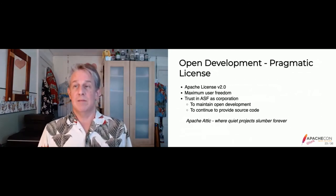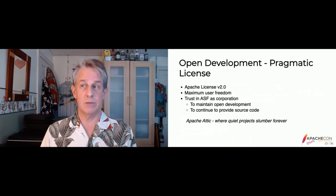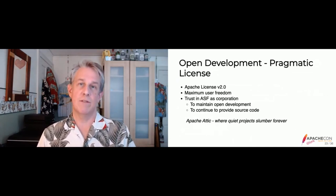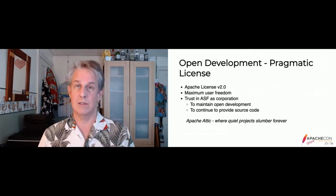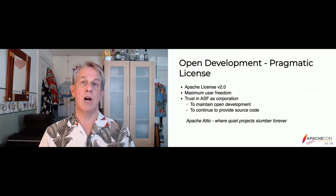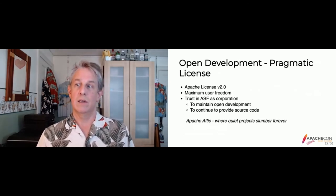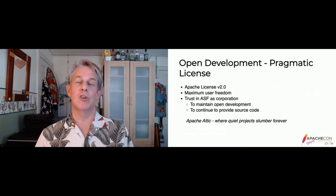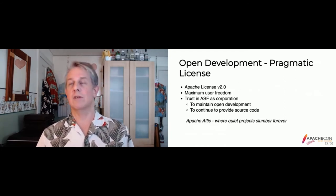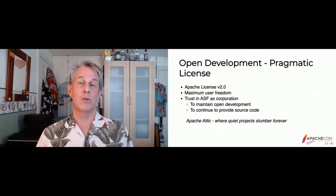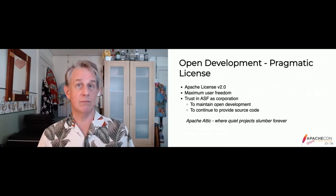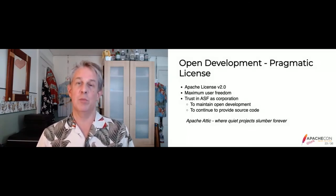A key part of open development is the pragmatic license. Apache is often synonymous with our license, now Apache License version 2.0. The point of our license is maximum user freedom. As opposed to copyleft or GPL-style licenses which want to ensure the code itself is free, we want to make sure users of the code can do whatever they want with it. That's important because it will attract more contributors back to the project. We have virtually no restrictions as long as you're not going to sue us or use our trademarks.